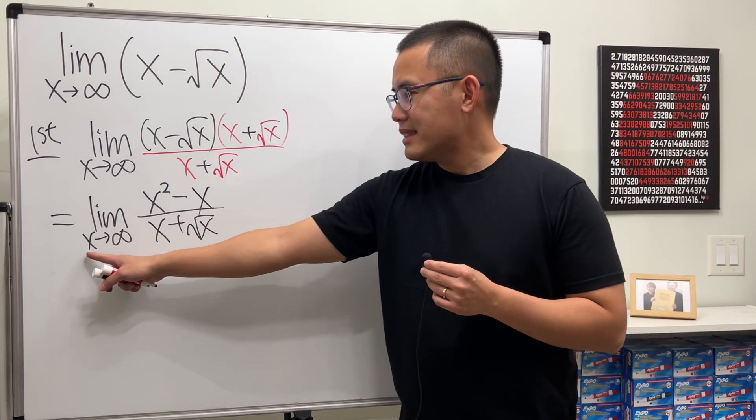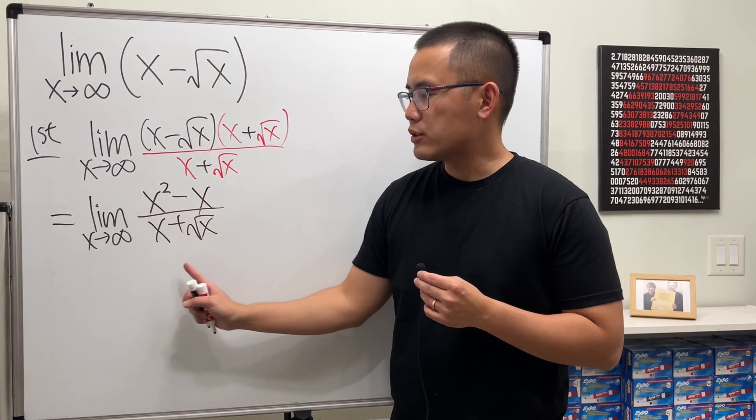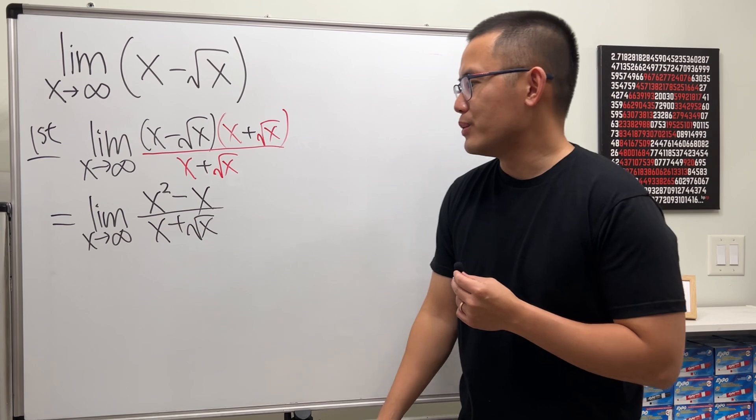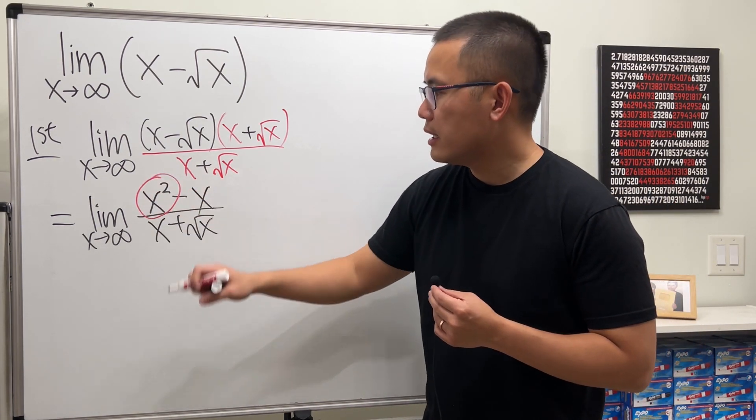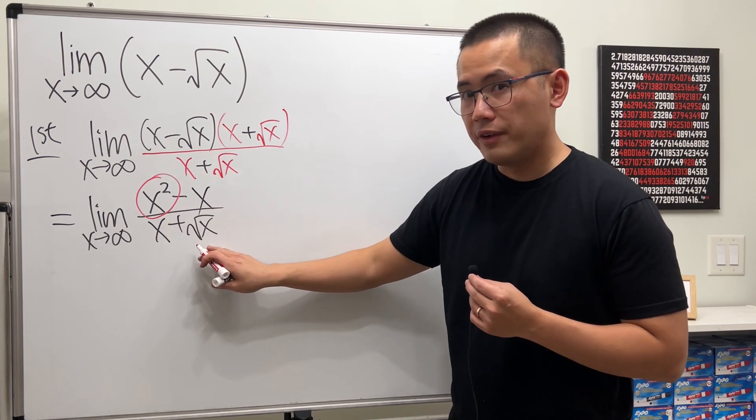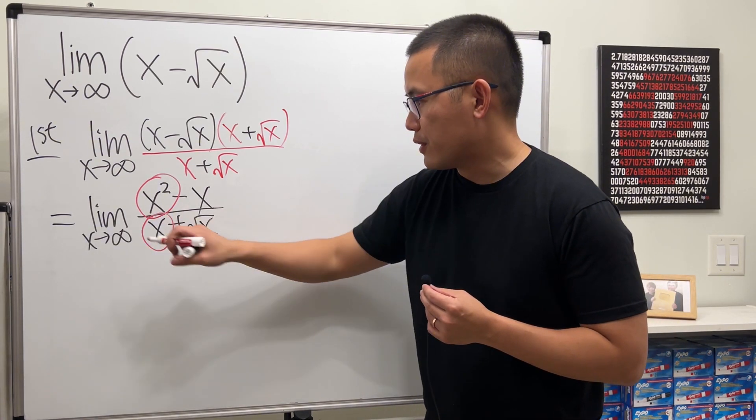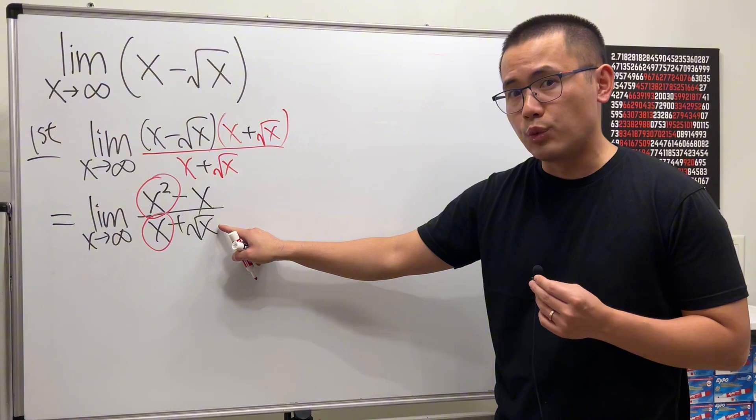Now x is approaching infinity, we have a rational case. Just pick up the highest power of x on the top, in this case x to the second, and then pick up the highest power of x on the bottom which is x to the first because this is x to the one half power.